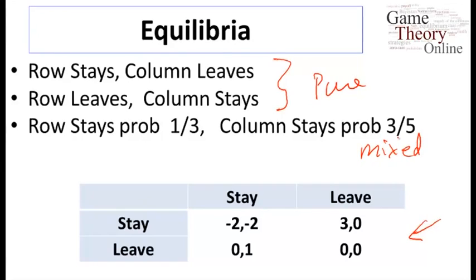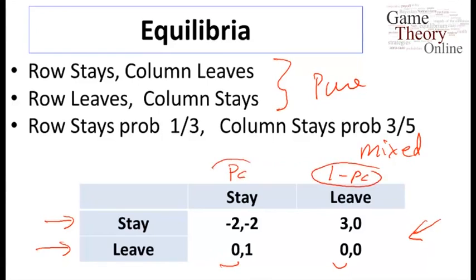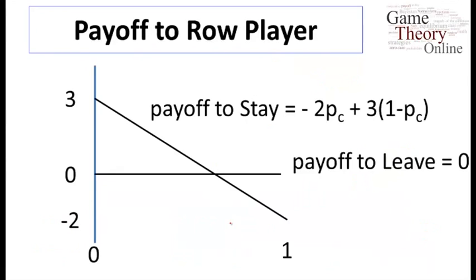Let's take a look at what the payoff to the row player looks like as a function of their strategies. If they leave, they get zero for sure. If they stay, what they get depends on the probability that the column player is staying versus leaving. We ended up with an equation that the payoff to staying is minus two times pc plus three times one minus pc.